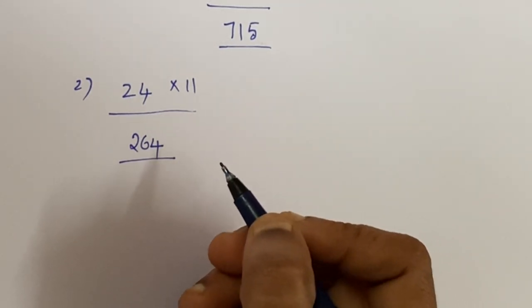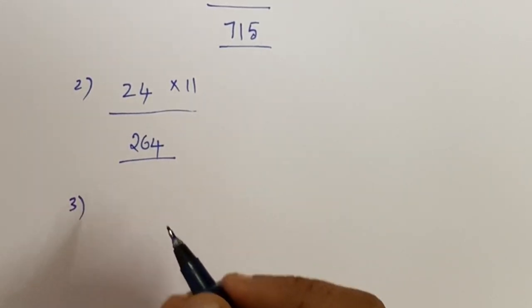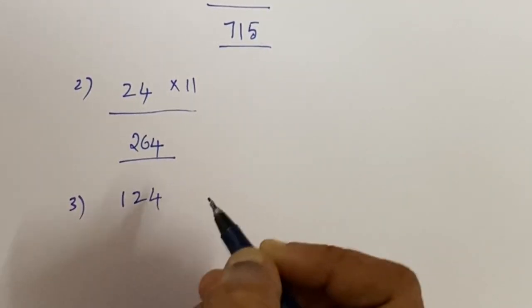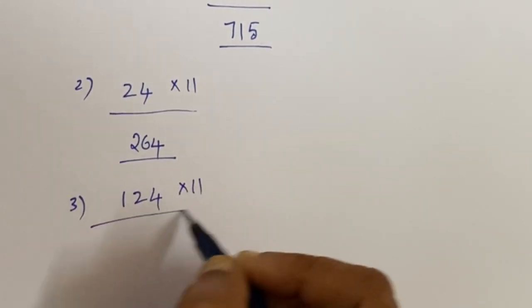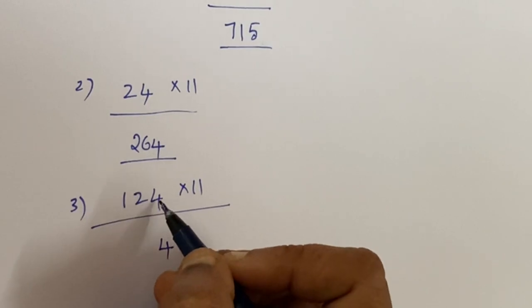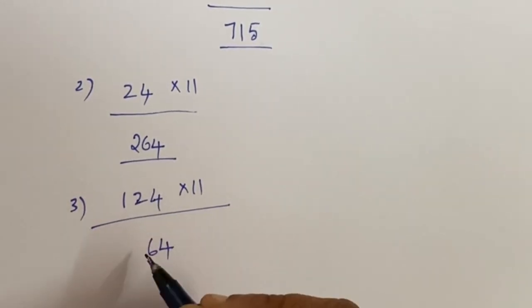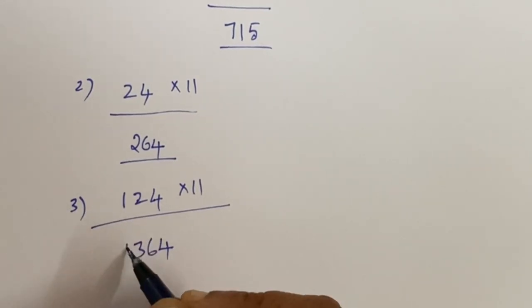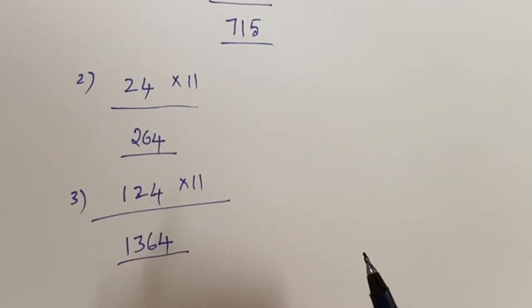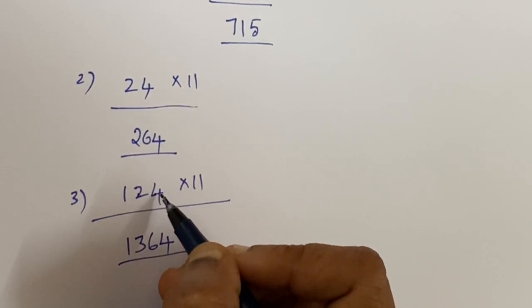Next we'll take another example, that is 124 into 11. So here also the units place 4 comes as it is. Next you have to add 2 plus 4, which is 6. Next 2 plus 1 is 3, and 1 as it is. So the answer is 1364.